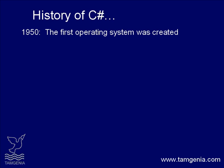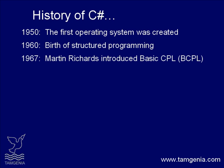Fortran was created for scientific analysis, COBOL for business applications, and RPG for record generation. As programs continued to grow, high-level languages were developed to give programmers more tools to handle complexity. The 1960s gave birth to structured programming languages to handle complex programs. This is the method of programming supported by languages such as C. The journey from ALGOL to C began with CPL. Martin Richards introduced Basic CPL, or BCPL, in 1967. Ken Thompson of Bell Labs drafted B in 1970 as the successor of BCPL. C was developed by Dennis Ritchie, also of Bell Labs, in 1972.